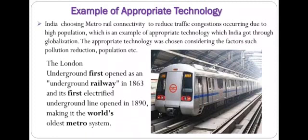An example of appropriate technology is India choosing metro rail connectivity to reduce congestion caused by high population — a technology obtained through globalization. The world's oldest metro train system was available in London, and India has adopted metro rail in all its metropolitan cities to reduce pollution and vehicle congestion. This is a clear example of appropriate technology.